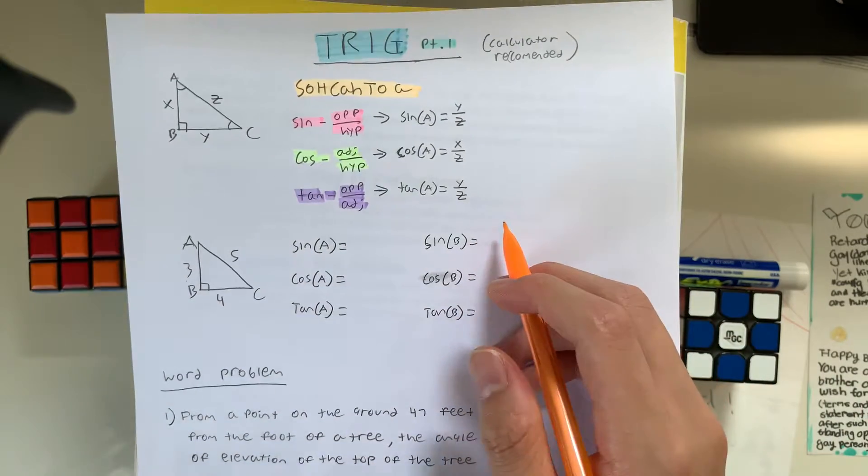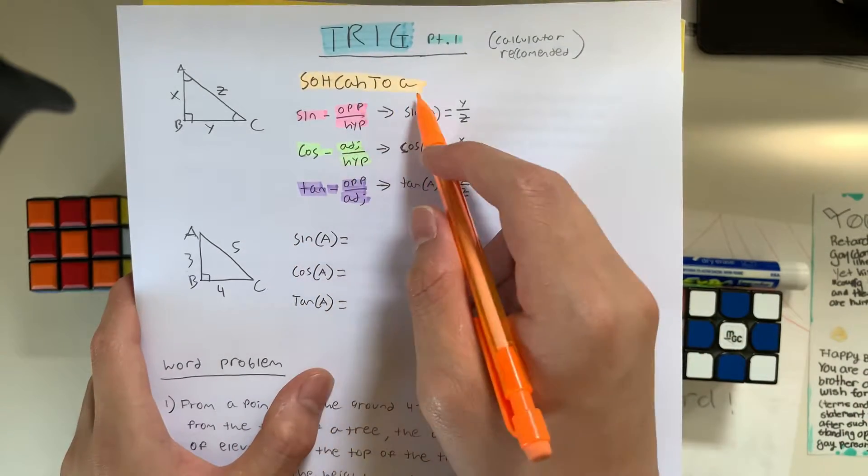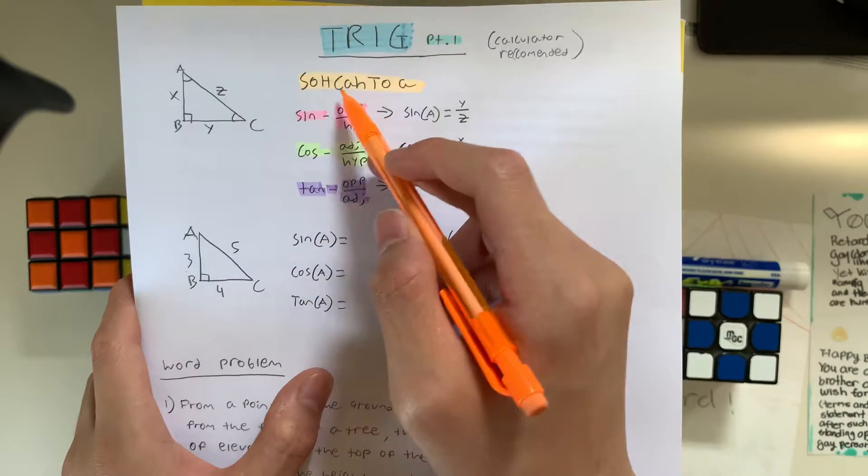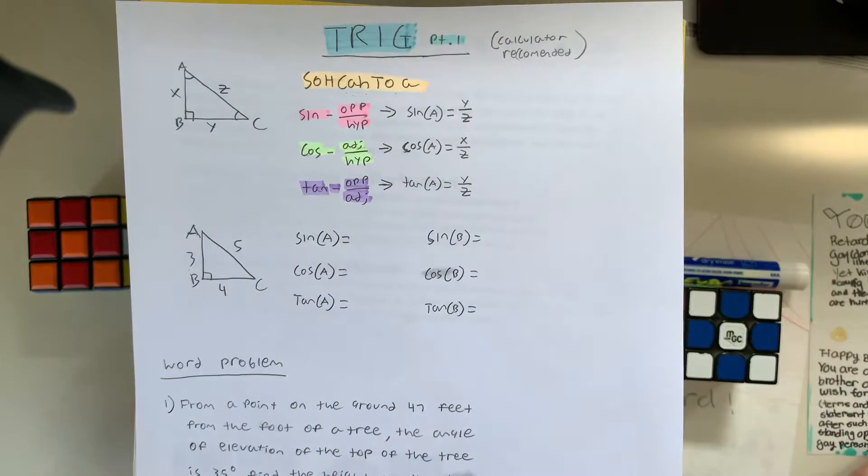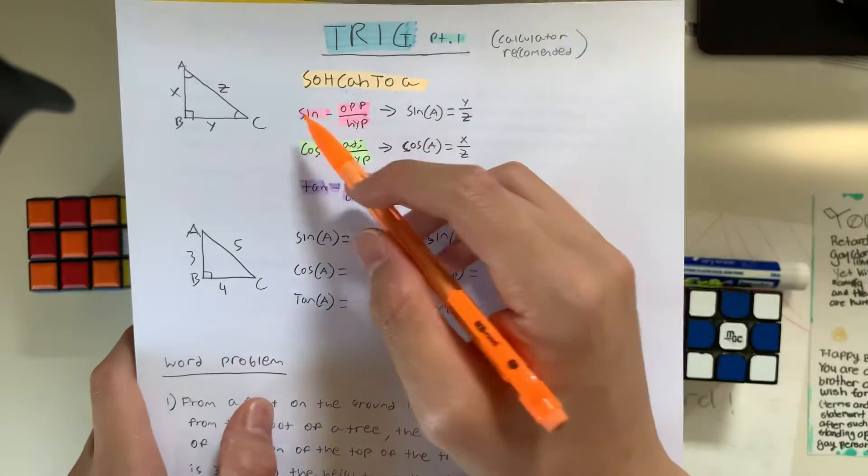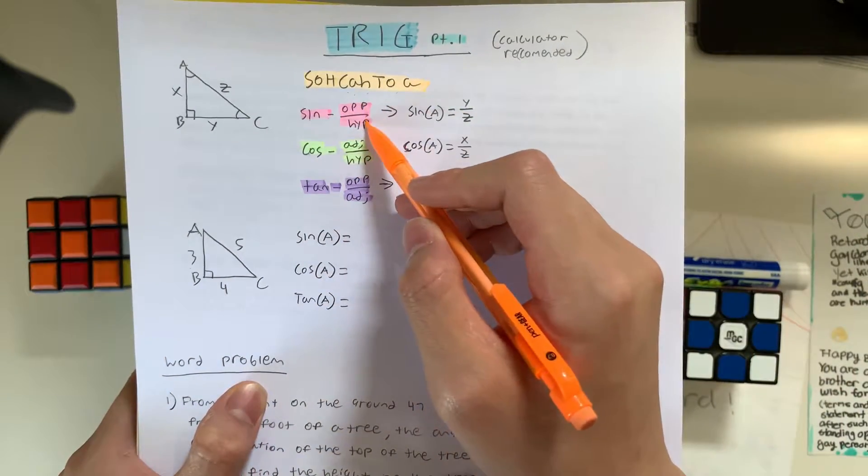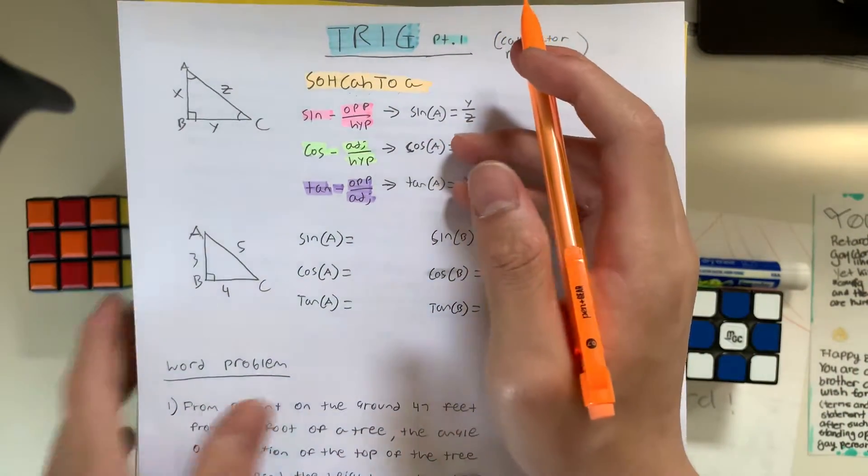So you're going to learn this famous phrase, SOHCAHTOA, S-O-H-C-A-H-T-O-A. So what does SOHCAHTOA mean? So sine is equal to opposite over hypotenuse, but what does that even mean?